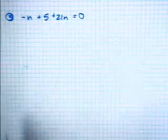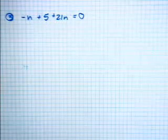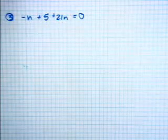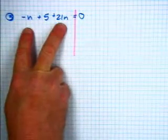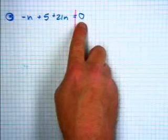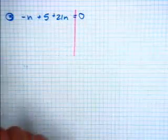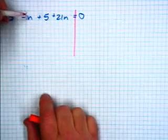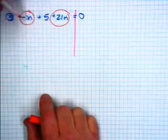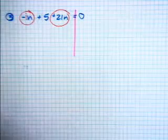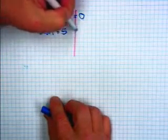The third problem is a bit more complicated. Notice that we do have like terms which we can combine. We've got an equals 0 there — that's what most people find the most confusing. Remembering that this is the same as negative 1n, if we combine those, that gives us 21n plus negative 1n, which is 20n plus 5 equals 0.